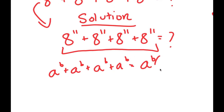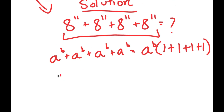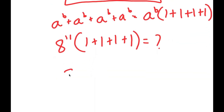So I get 8 to the power of B times — well, 8 to the power of B divided by itself is 1 — so I get 8 to the power of B times 1 plus 1 plus 1 plus 1. In this case, I have 8 to the power of 11 added to itself 4 times, so I can factor out 8 to the power of 11 and get 8 to the power of 11 times 1 plus 1 plus 1 plus 1. And 1 plus 1 plus 1 plus 1 equals 4, so I get 8 to the power of 11 times 4.